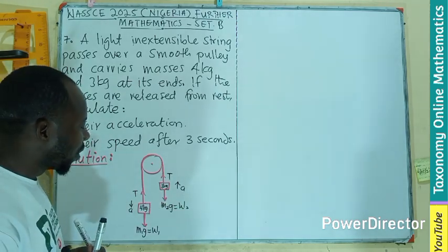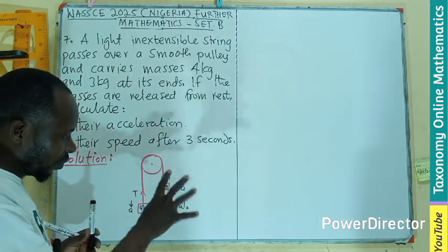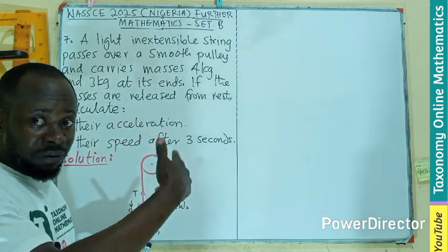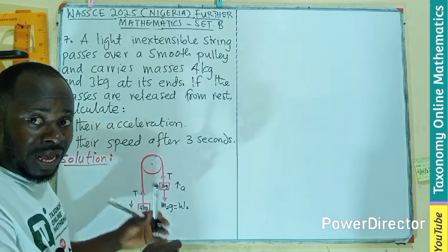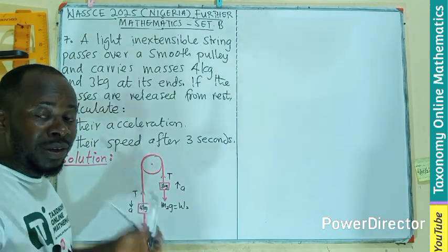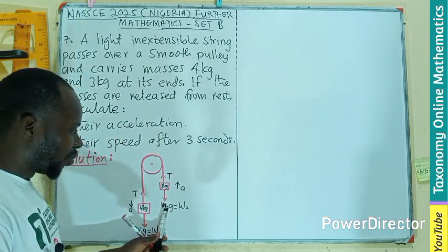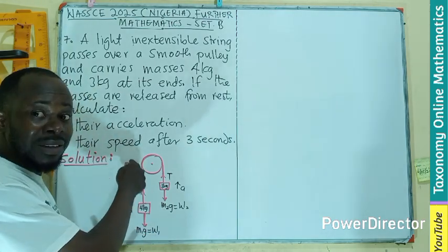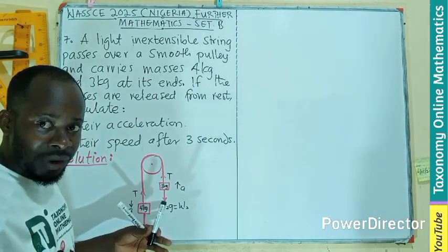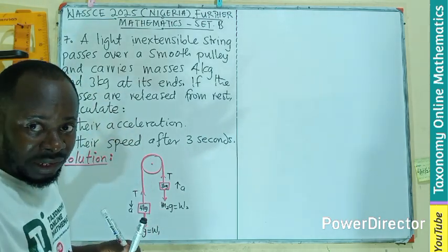Since the pulley is smooth and the string is inextensible, when the bodies are released they will all take the same speed — the speed that one side is moving up will be the same speed the other is moving down. So the acceleration is going to be a common acceleration.